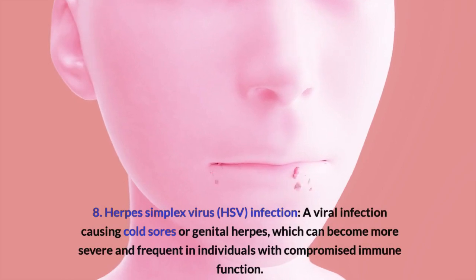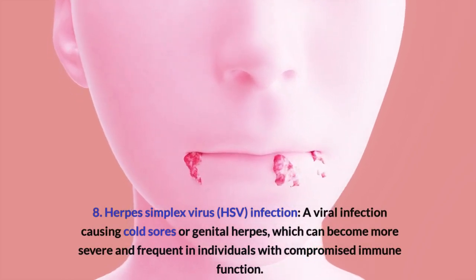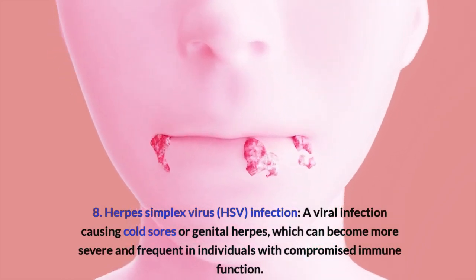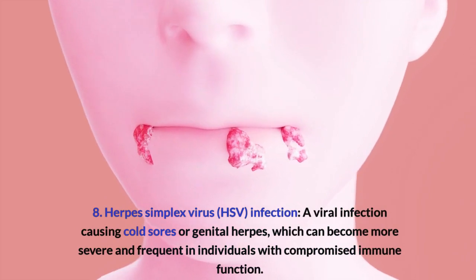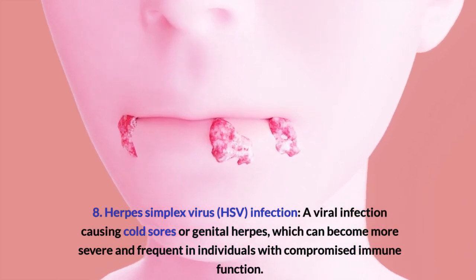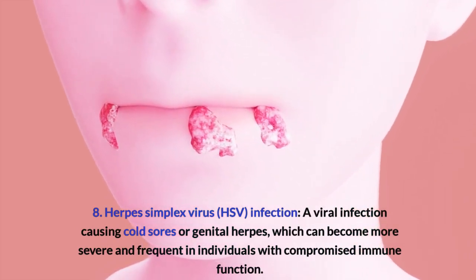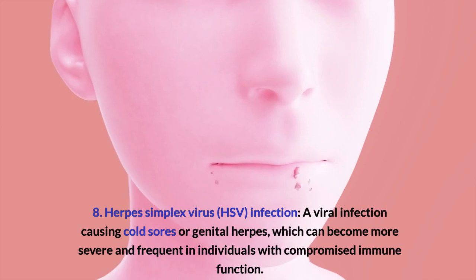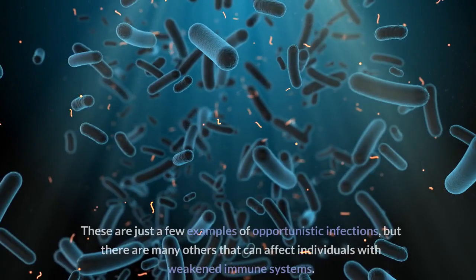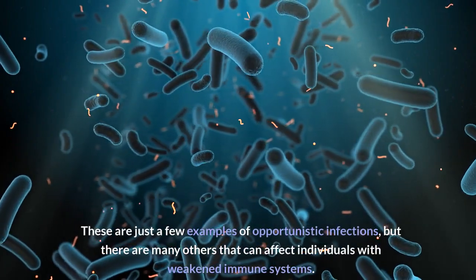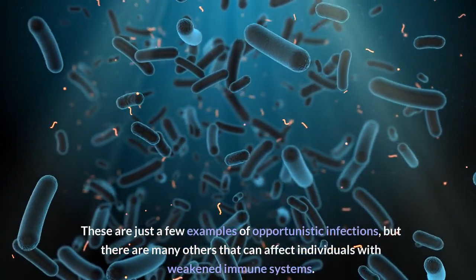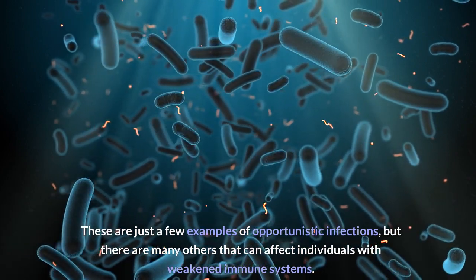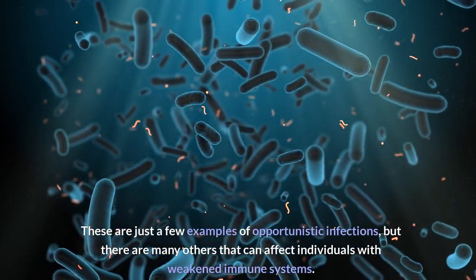Eighth, Herpes simplex virus (HSV) infection: a viral infection causing cold sores or genital herpes, which can become more severe and frequent in individuals with compromised immune function. These are just a few examples of opportunistic infections, but there are many others that can affect individuals with weakened immune systems.